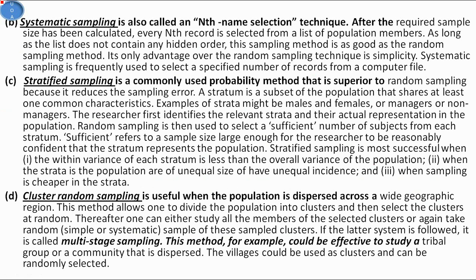Systematic sampling is also called the nth name selection technique. After the required sample size has been calculated, every nth record is selected from a list of population members. As long as the list does not contain any hidden order, this method is as good as random sampling. Its only advantage over random sampling is its simplicity. Systematic sampling is frequently used to select a specified number of records from a computer file.